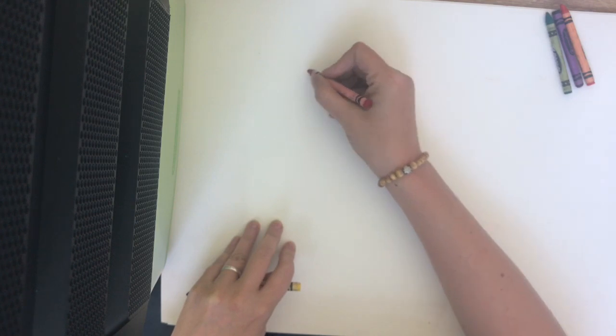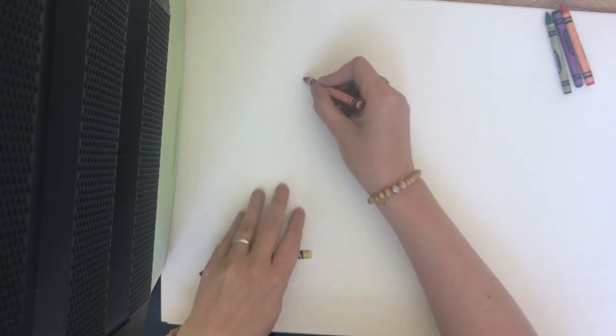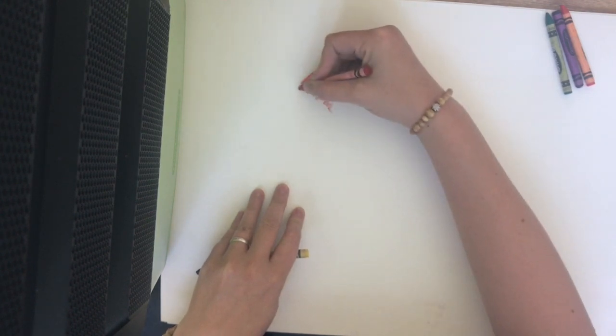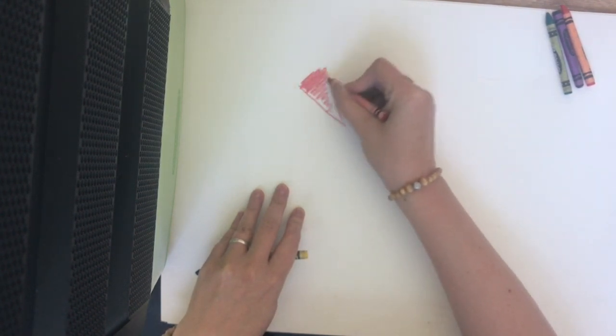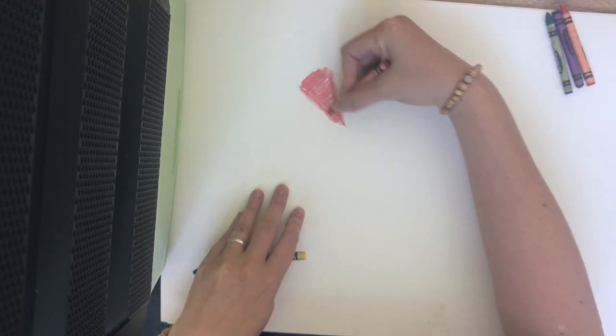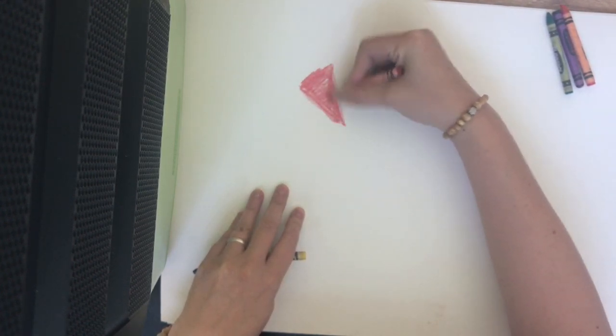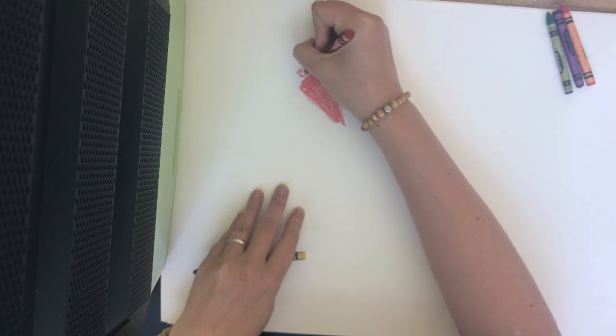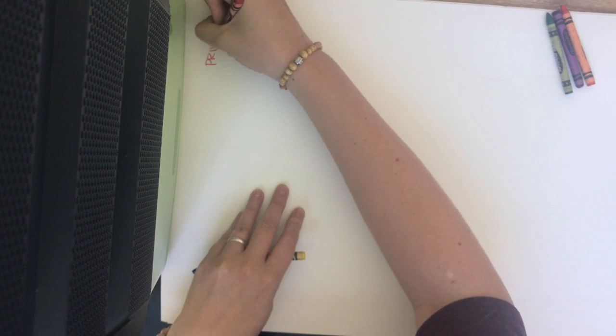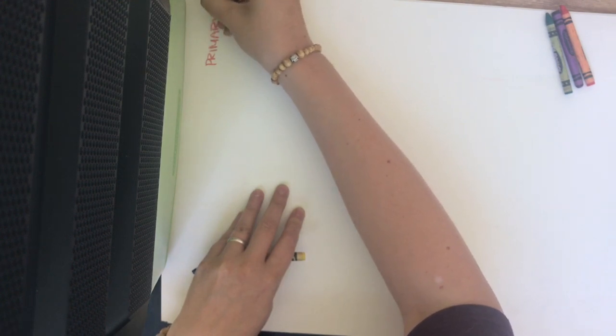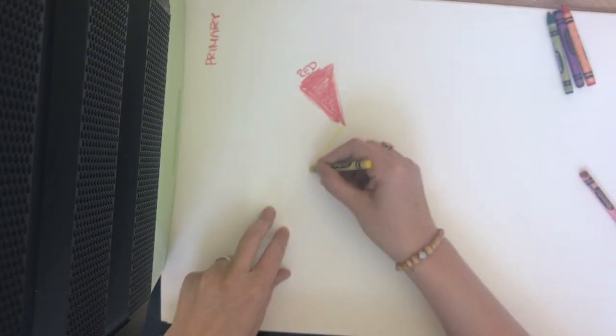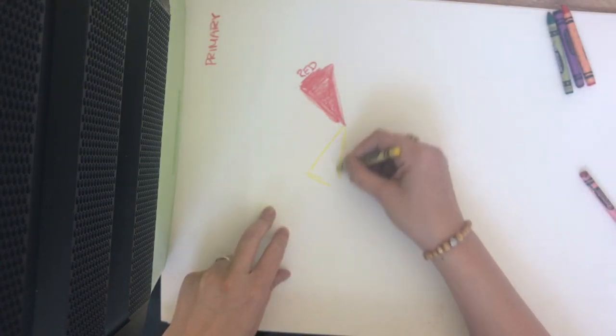It begins with three points. So these are our primary colors. We have red. Kind of go into a nice little triangle here. You can do this freehand or there's a million different. You can look up color wheel template on the internet and print out any one of those. Red is a primary color. Primary. Prime being one, right? Then we're going to go out this way. Yellow is our second primary color.